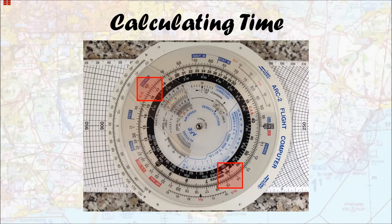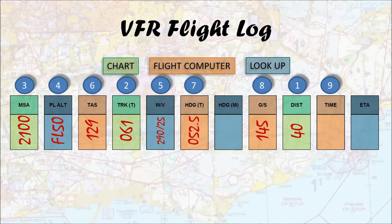So we've got our speed of 145 knots, distance 40 miles, returning a time of 16.6 minutes. Converting the decimal: that's 16 minutes 36 seconds, and we pop that into our flight log.